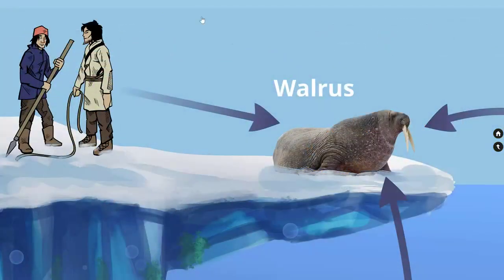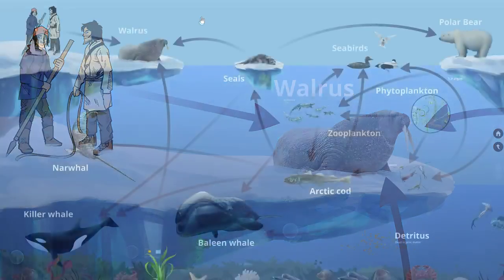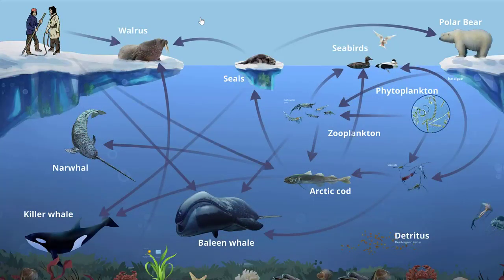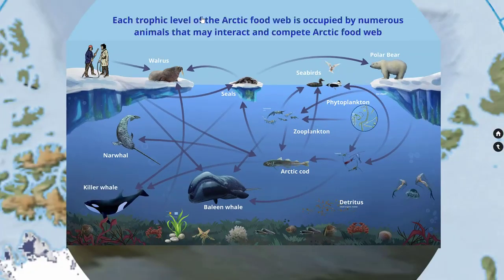Humans can also be an important part of the marine food web. Indigenous Arctic peoples living in communities around the coastal Arctic have hunted walrus, whales, and fish from the Arctic Ocean for hundreds of years, and rely on this important food resource for their way of life. So you can see that in reality, on land and in the ocean, the transfer of energy from its original source to higher trophic levels is not just a simple linear process — each trophic level is occupied by numerous animals that may interact and compete, forming a food web.